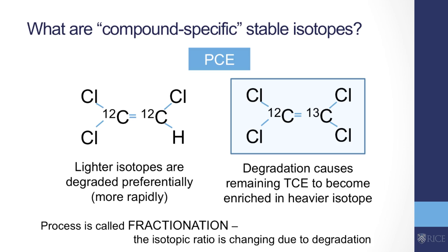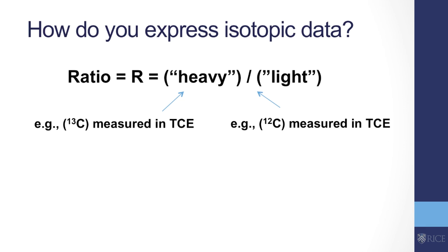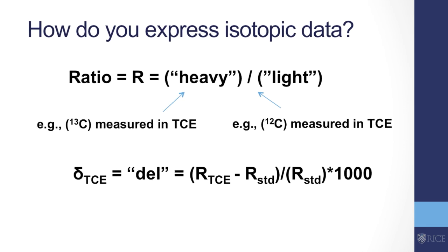Now let's talk about how we express this isotopic data. We're interested in this isotopic ratio, or R, between the heavy and the light isotopes in a compound. For carbon, that's C13 to C12. There's another convention that allows you to correct for the standard ratio of the isotopes. You're basically dealing with a standard value for R — the standard ratio expected for C13 to C12. These are reported on a per mil basis by multiplying the ratio by 1,000 — sort of like a percentage, but because the ratios can be really small, it's easier to work with.